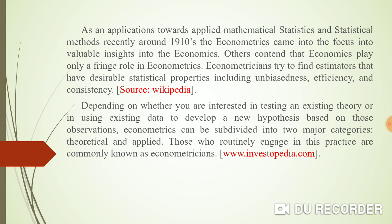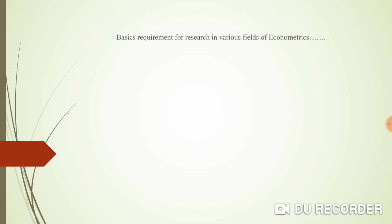People studying econometrics are called econometricians. We try to find estimators that have desirable statistical properties, including unbiasedness, efficiency, and consistency. Depending on whether you are interested in the theoretical or applied part, econometrics is majorly divided into theoretical econometrics and applied econometrics. Those routinely engaged in this practice are commonly known as econometricians.